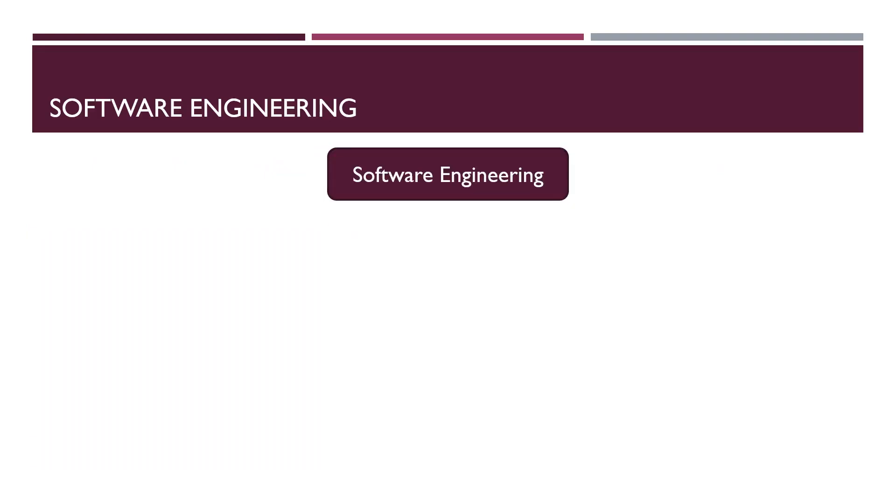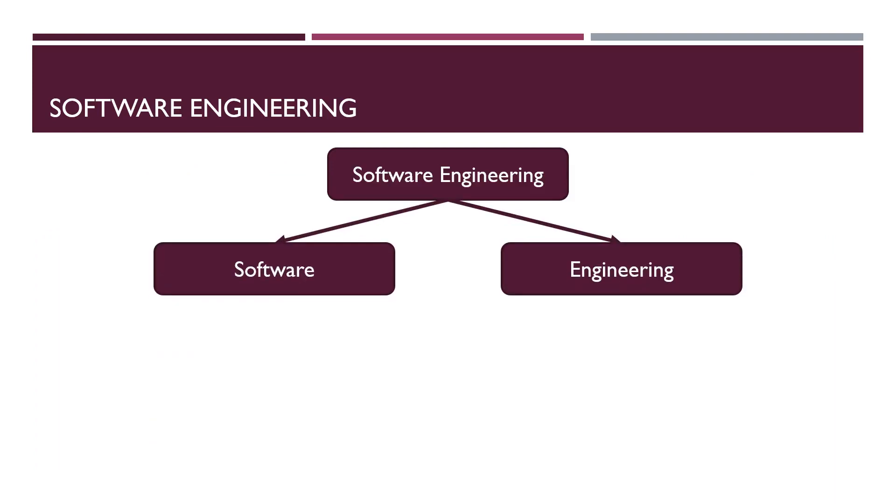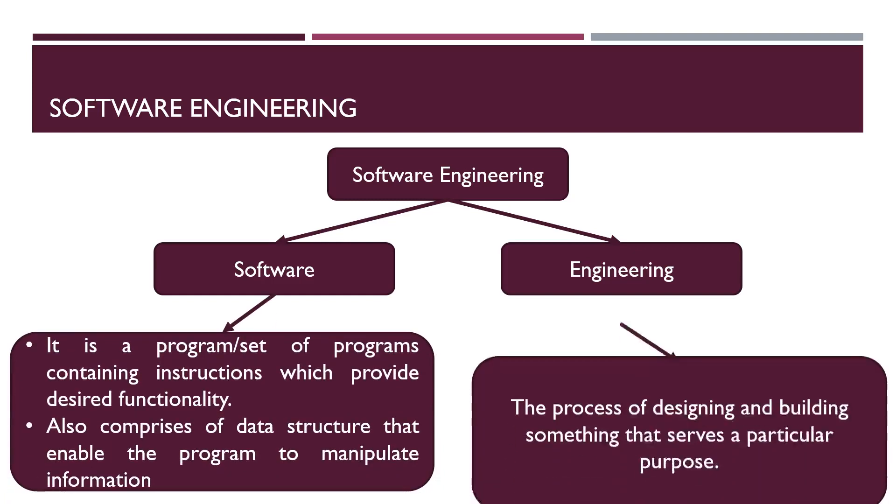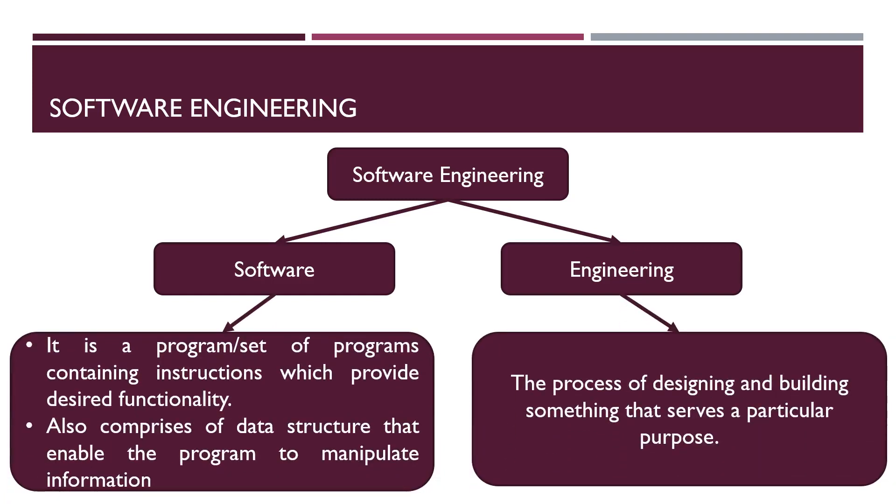First, we'll discuss the term Software Engineering as two different terms. Engineering is basically a process of designing and building something that serves a particular purpose. When we follow some particular procedure for development of something, then it is called Engineering, so that the output will be desired output which we expect at the beginning of the process.